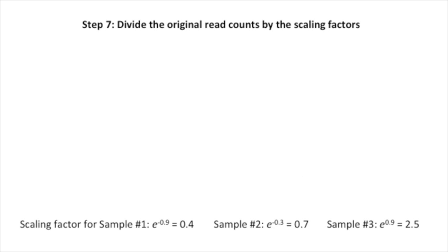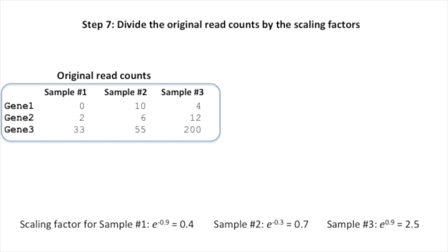That leads us to step seven. Divide the original read counts by the scaling factors. Here's our table that lists the original read counts. Note, gene one is part of the original read counts. We didn't use gene one when we calculated the scaling factors because it has a zero for read counts in sample number one. However, we still need to scale the read counts for the other samples.